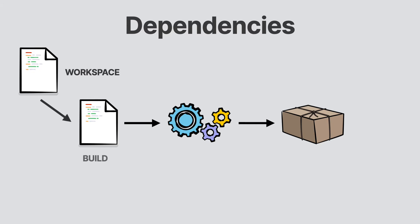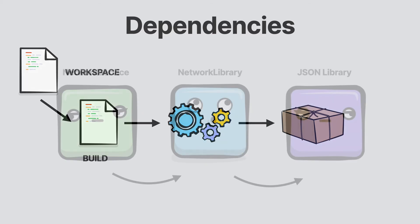Later, you'll see that when you create build targets, those targets will depend on other targets. When declaring those targets, you want the build targets to match the actual dependencies being used in the code. That is, your build dependency graph should match the actual code dependency graph.